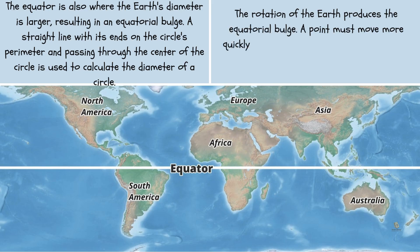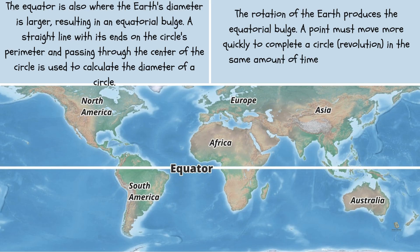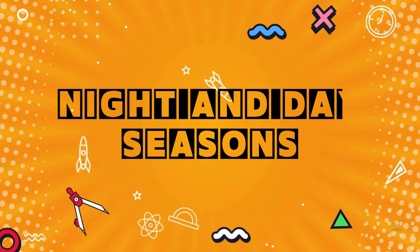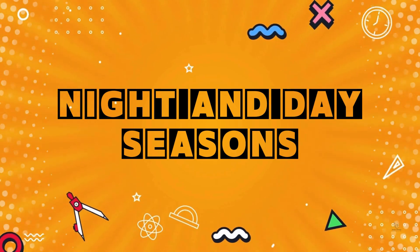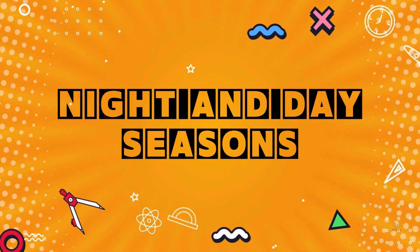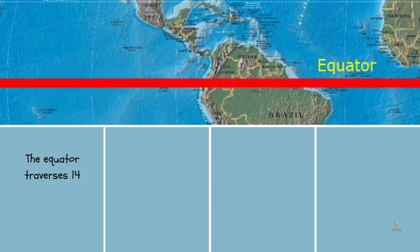A point must move more quickly to complete a circle (revolution) in the same amount of time as latitude lines are bigger. The equator traverses 14 nations' land masses and jurisdictional seas.